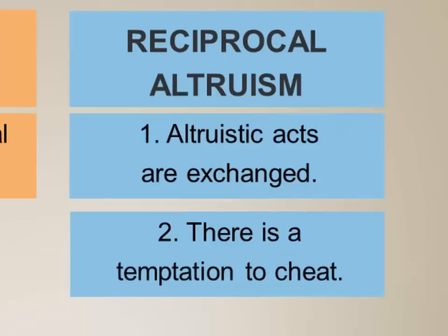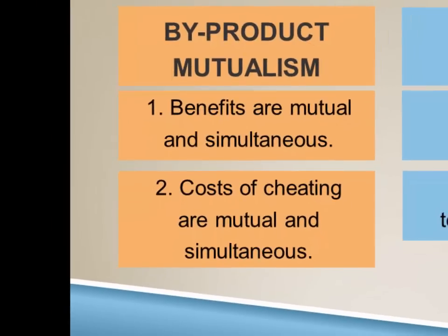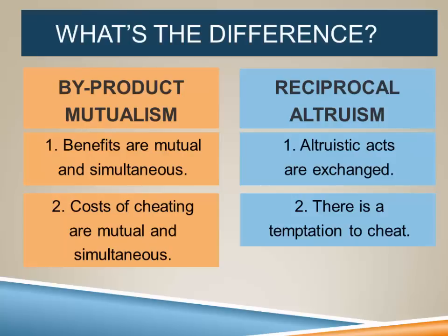What's critical to reciprocal altruism is that there's a delay between those altruistic acts, and because of that there's a possibility of not reciprocating and a temptation to cheat. In byproduct mutualism, just as the benefits are mutual and simultaneous, so too are the costs of cheating. If the anemone stung the clown fish it would lose the cleaning. Neither can participate without both benefiting, and neither can defect without both being harmed.